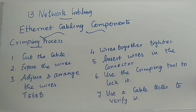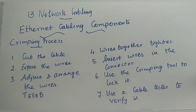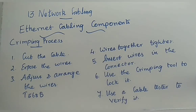To summarize the crimping process: Step 1 — cut the cable to the needed length. Step 2 — expose the wires inside. Step 3 — adjust and arrange wires using the T568B method. Step 4 — bring wires together tightly and cut to equal length. Step 5 — insert wires into the connector slots. Step 6 — lock with the crimping tool. Step 7 — use a cable tester to verify.